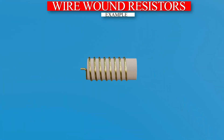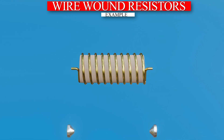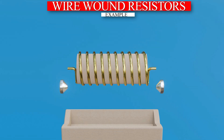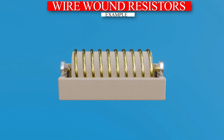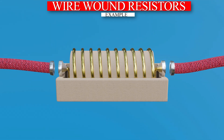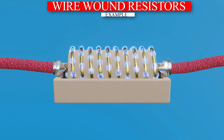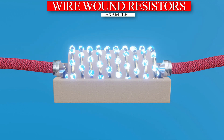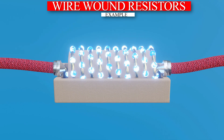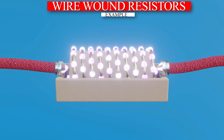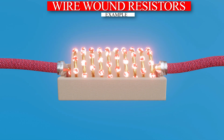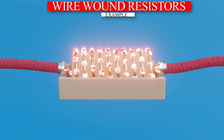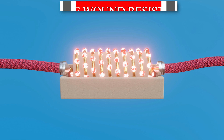Let's delve into the structure of a resistor. Imagine a wire around a ceramic core. These wire resistors consist of nickel wire wrapped around a ceramic core, slowing down the current flow due to the path of this coil. Electrons have to take an unusual path, slowing them down and generating heat. The length and width of the resistor determine its resistance.